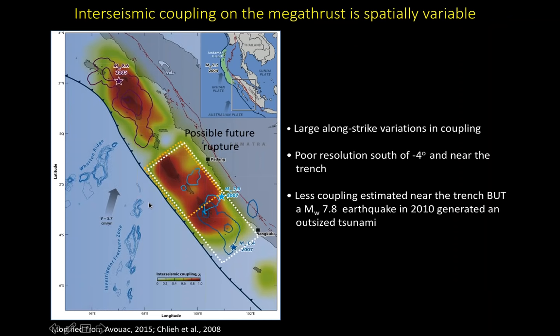This map shows a coupling map estimated from both GPS and coral data going back 40 years. The prominent result is large along-strike variations in coupling. There is poor resolution south of minus 4 degrees latitude and near the trench. Interestingly, less coupling is estimated near the trench, yet a magnitude 7.8 earthquake in 2010 generated an outsized tsunami.